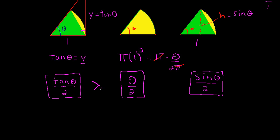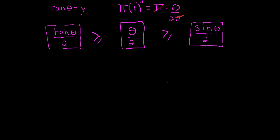By construction, we know that the big triangle area is bigger than the sector area, which is bigger than the green triangle area. The next step might seem like magic — creativity can certainly be your friend when proving things in math. I'm going to multiply every term by the function 2 over sine of theta.